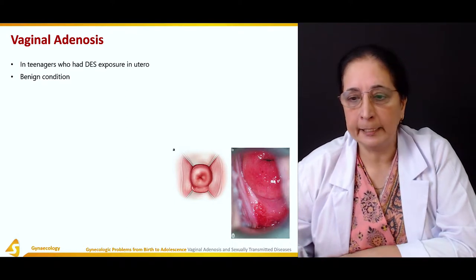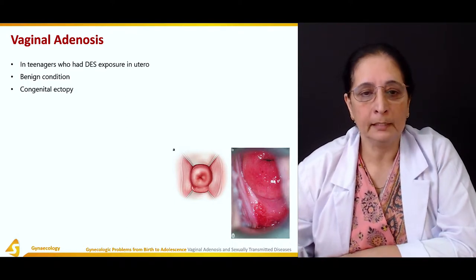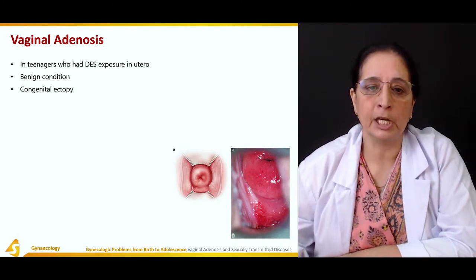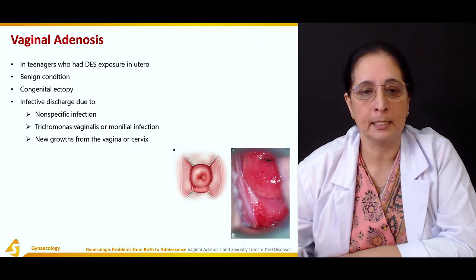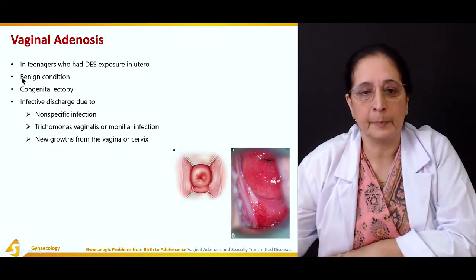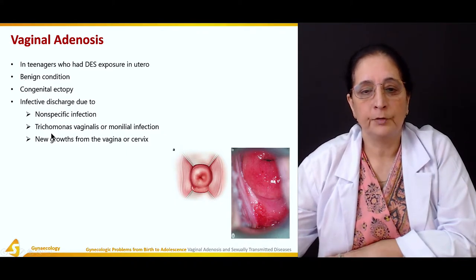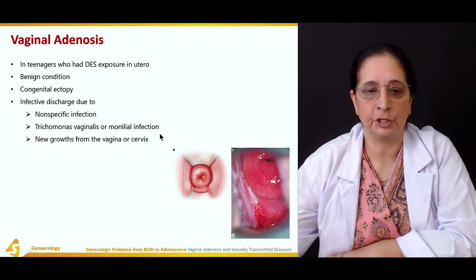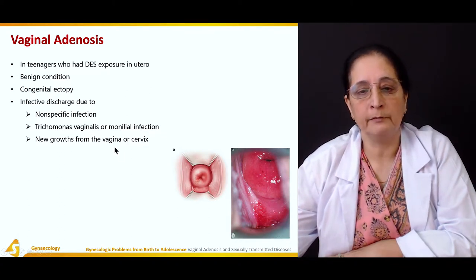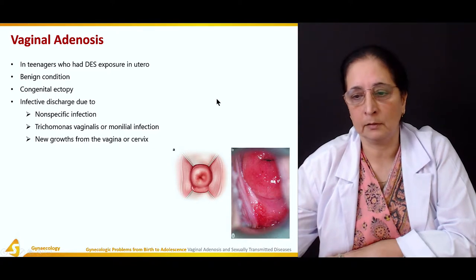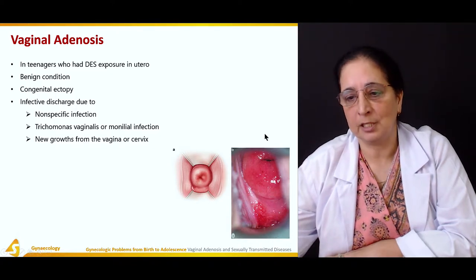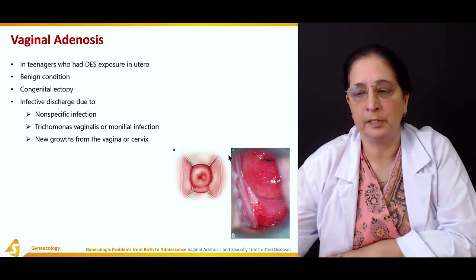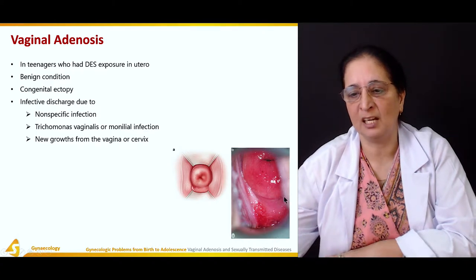It's a benign condition. There is congenital ectopy present and there is infective discharge due to non-specific infection, trichomonas vaginalis, or monilial infection, and new growth from the vagina or cervix. So vaginal adenosis is a new growth of tissue from the cervix or vagina.